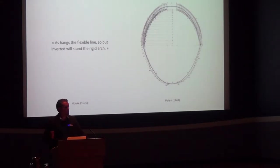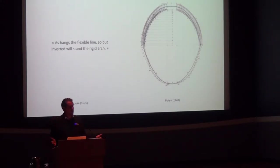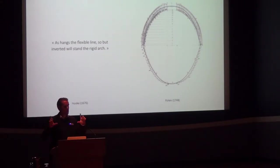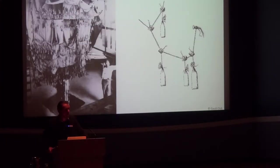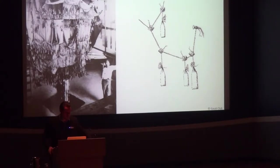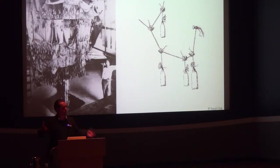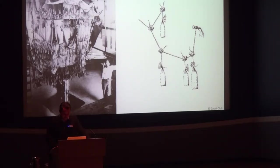One way to generate a thrust line is the principle: as hangs the flexible line, so inverted will stand the rigid arch. If you have a flexible string under a certain loading condition and you freeze and flip the geometry, you get a pure compression state. This is very powerful but very painful to implement with physical hanging models. Gaudí used 10 years to design his hanging model for Parc Güell with an expert team — every move of a sandbag shifted everything around. Our clients nowadays might not be willing to wait 10 years.